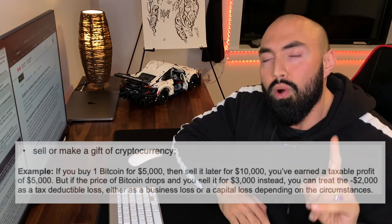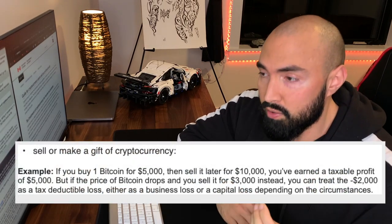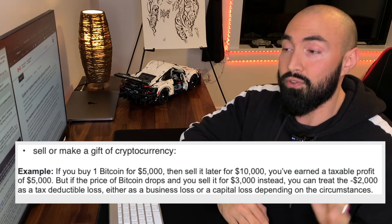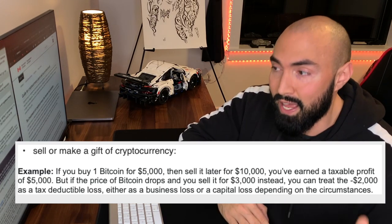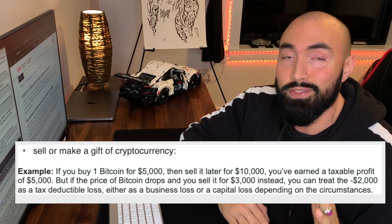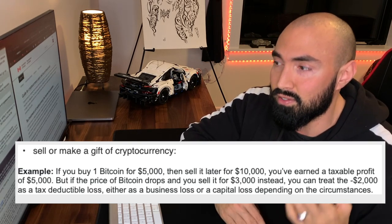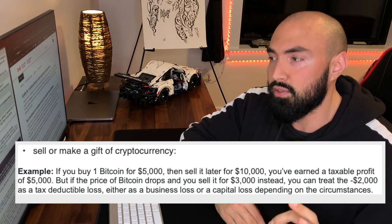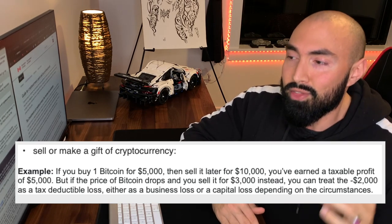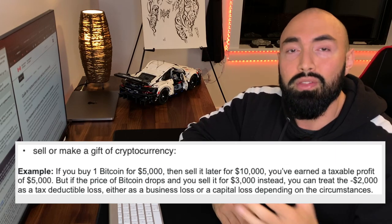Let's go through some simple examples of what triggers a taxable event. Number one: if you sell or make a gift of a cryptocurrency. If you buy one Bitcoin for $5,000 and later sell it for $10,000, you've earned a taxable profit of $5,000. But if the price of Bitcoin drops and you sell it for $3,000 instead, you can treat that $2,000 loss as a tax-deductible loss — either as a business loss or a capital gains loss depending on the circumstance.